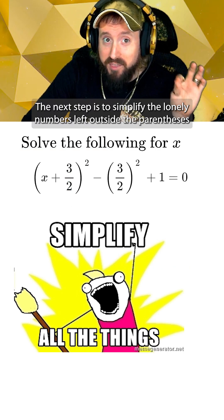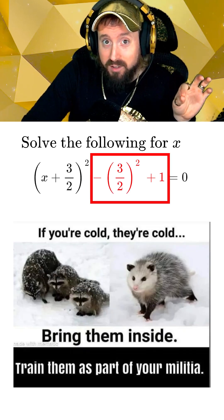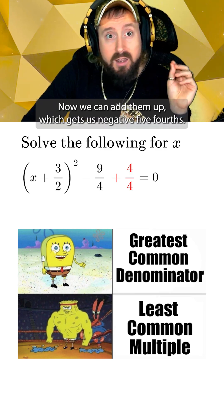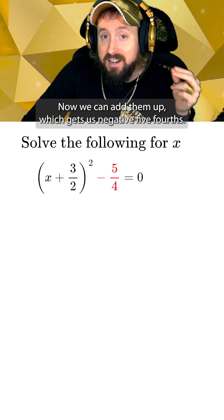The next step is to simplify the lonely numbers left outside the parentheses by actually doing the squaring and reuniting them together by finding common denominators. Now we can add them up which gets us negative five-fourths.